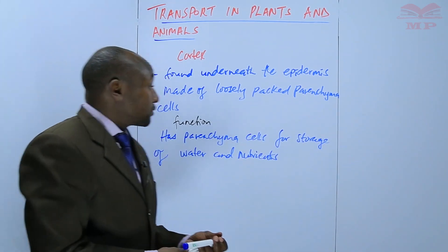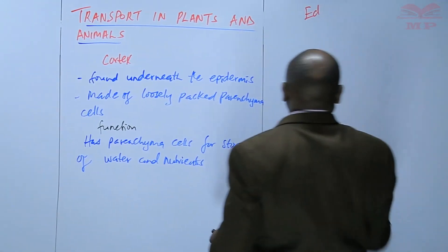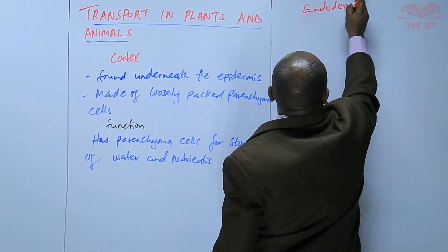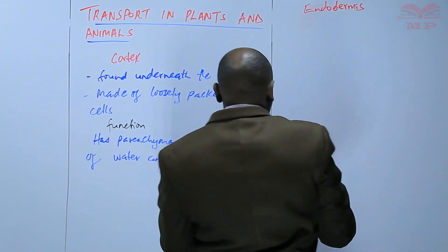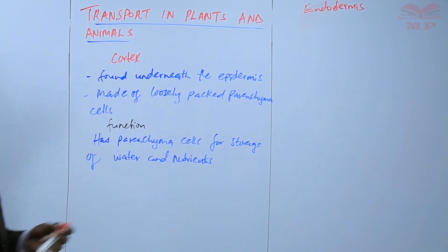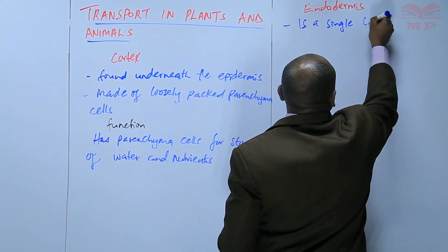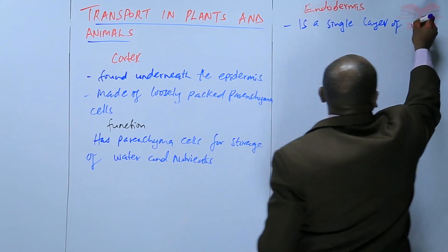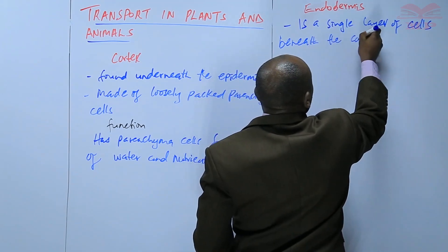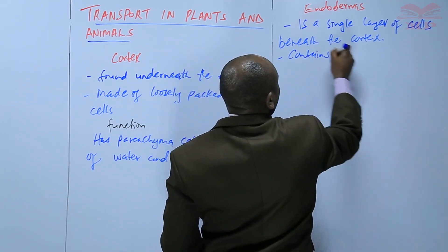The next tissue we are going to look at is the endodermis. The endodermis is found beneath the cortex, and it is made up of a single layer of cells. It contains starchy grains.